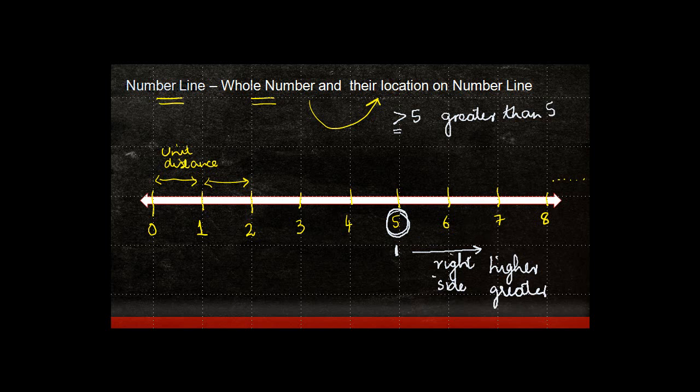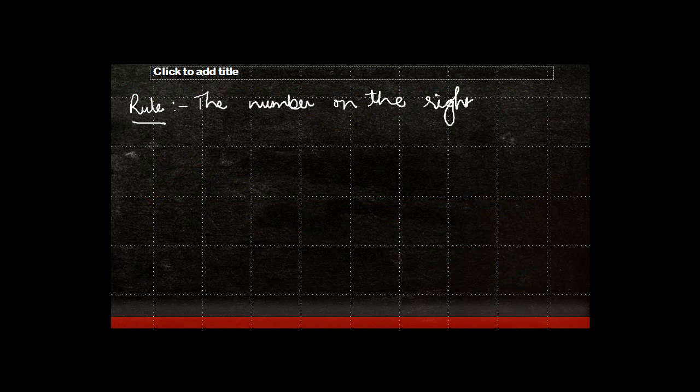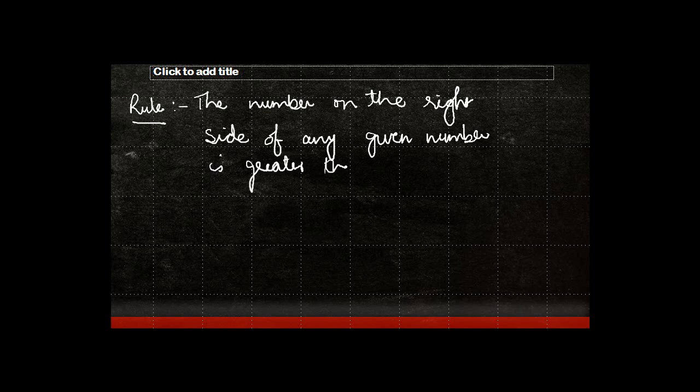As against this, if I have to actually look for number 6, what do I get on the right side? I get number 7 and 8, and again, they are greater. So by this, what we can say is that there is a rule which exists for a number line, and that is that the number on the right side of any given number is greater than the number itself.